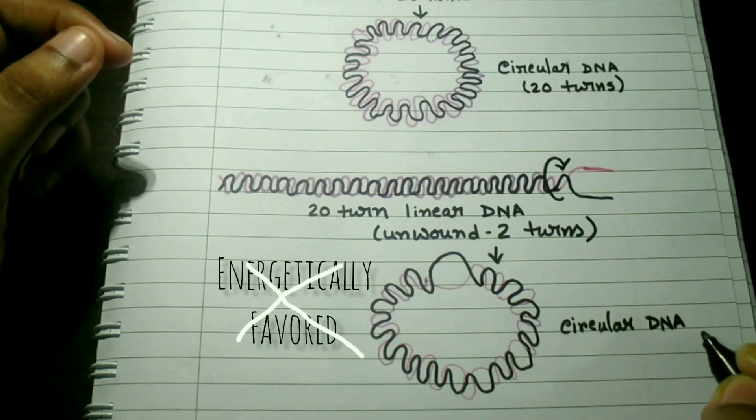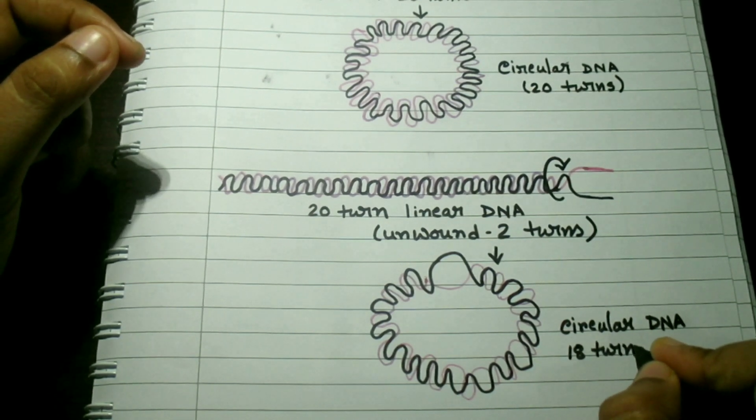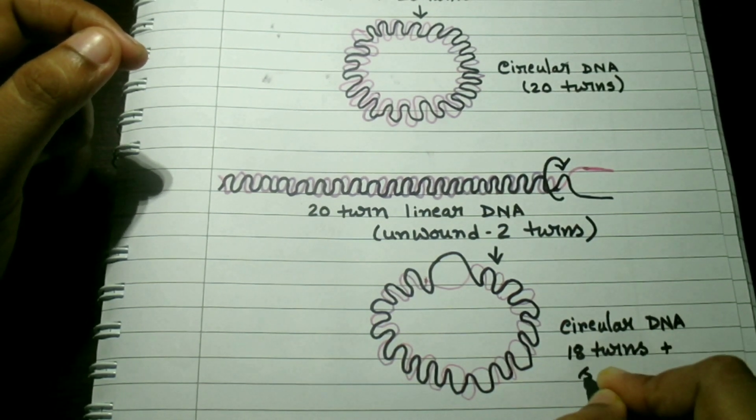Such a structure is not energetically favored and will switch to a structure with 20 helical turns and two superhelical turns, a supercoiled form of DNA.